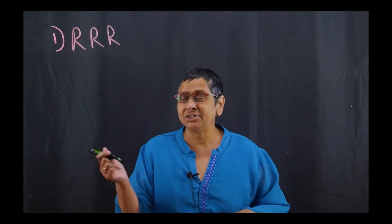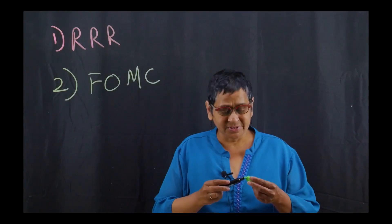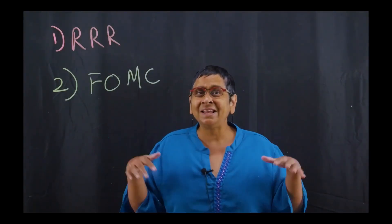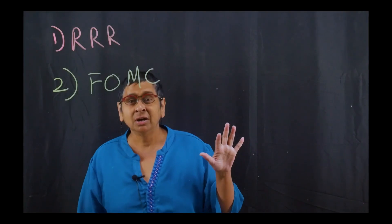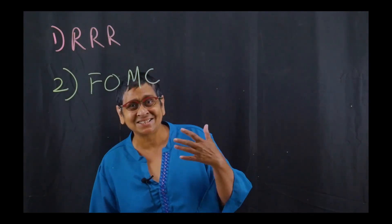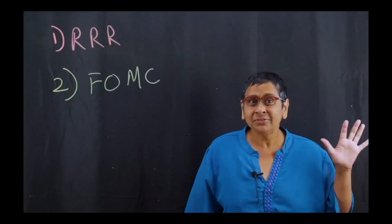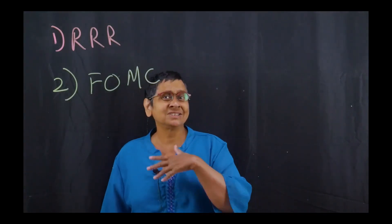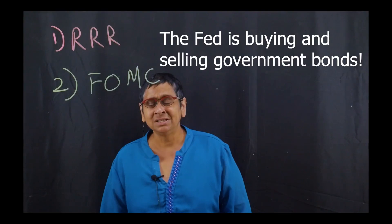The other thing the Fed can do is use the Federal Open Market Committee to engage in Open Market Operations. Open Market Operations essentially means the Fed itself goes into the open market buying and selling treasury bills. The Fed doesn't issue its own stocks and bonds — those are issued by the government — but the Fed is buying and selling government bonds.